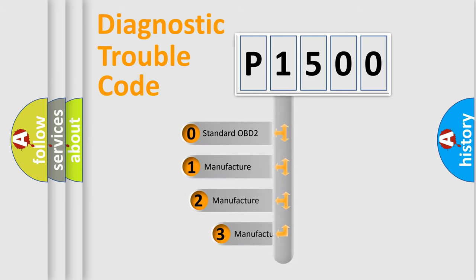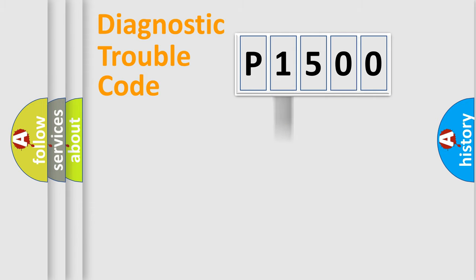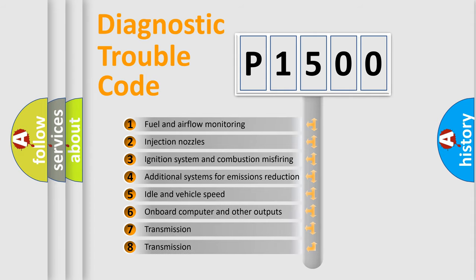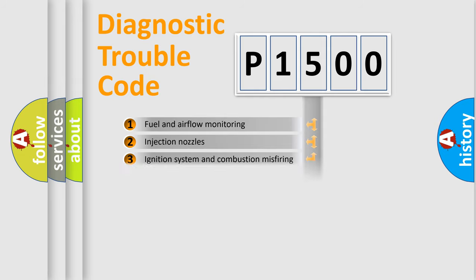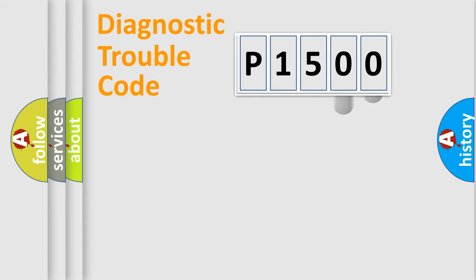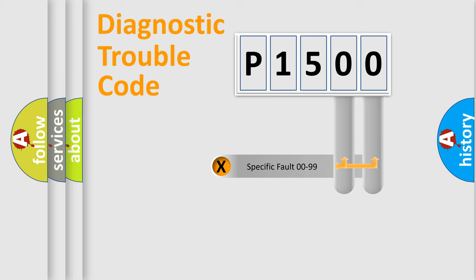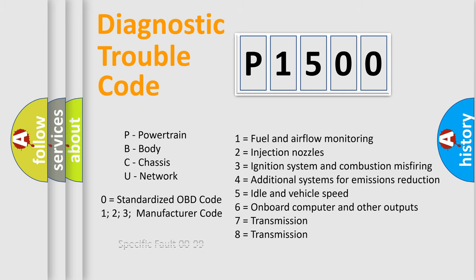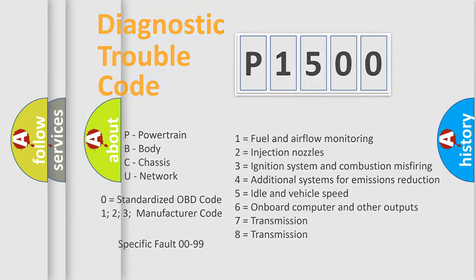If the second character is expressed as zero, it is a standardized error. In the case of numbers 1, 2, or 3, it is a more specific expression of a car-specific error. The third character specifies a subset of errors. This distribution is valid only for the standardized DTC code, and only the last two characters define the specific fault of the group. This division is valid only when the second character is expressed by the number zero.